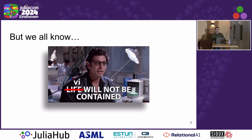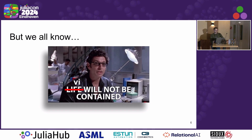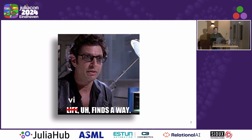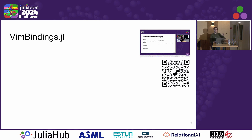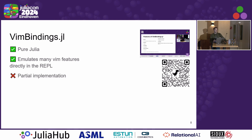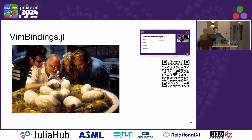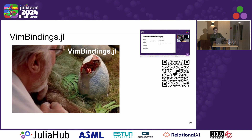But I think we all know that once something's been unleashed into the world, it can't be re-contained. VI will not be contained. VI finds a way. So last year I presented VimBindings.jl, which is a pure Julia package that's available now. It emulates many of the features of Vim directly in the Julia REPL and it gets the job done. It moves a Vim user from not being able to use Julia at all to maybe being able to use Julia with reservations. But it's a partial implementation and it's not very configurable. This is what I see as the Julia community, the innocent REPL users, and the VimBindings package being unleashed — just the start of what's to come.